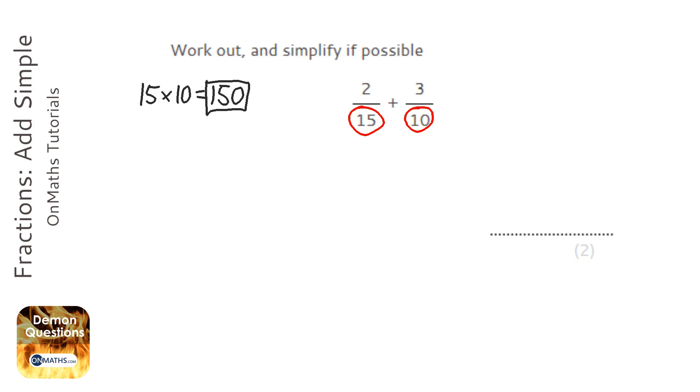I can make them both 30. So I'm going to times the first one by 2, top and bottom. I'm going to times the 2 at the top and the 15 at the bottom by 2.